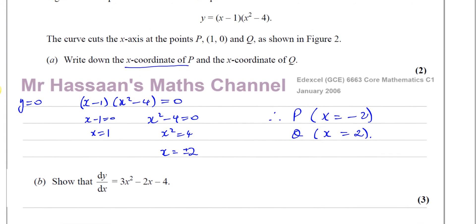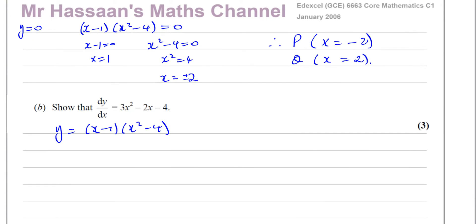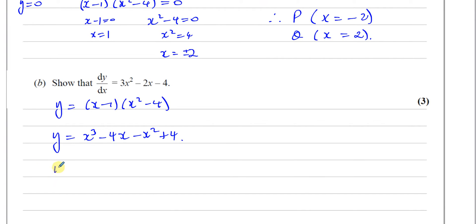Part B says show that dy/dx is equal to 3x squared minus 2x minus 4. dy/dx is the gradient function, found by differentiating the original function: y equals x minus 1 times x squared minus 4. To differentiate this, we first prepare it by expanding the brackets: y equals x cubed minus 4x minus x squared plus 4. Then we rearrange it in order — x cubed term, then x squared, then x, then the constant — just to make it neater.